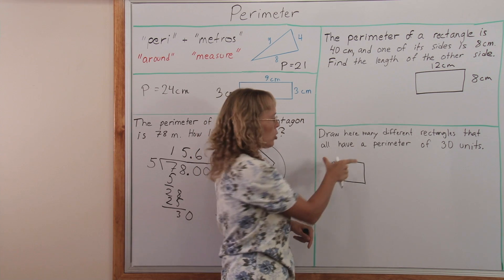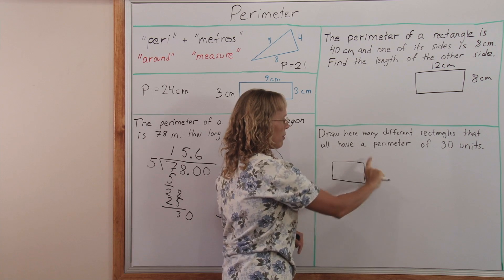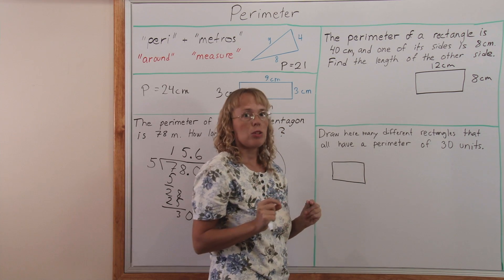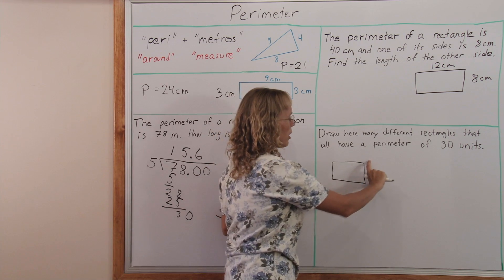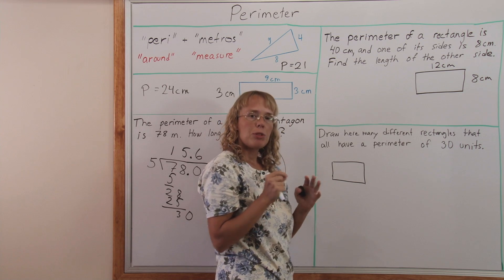But think of again these two sides that make half of the perimeter. These two sides are 15 units. So all I need to do is find two numbers that add up to 15.